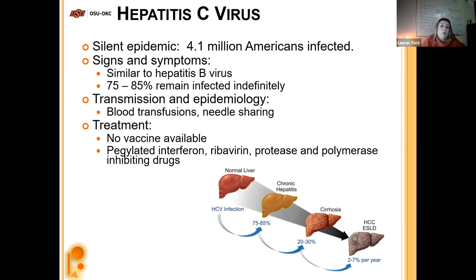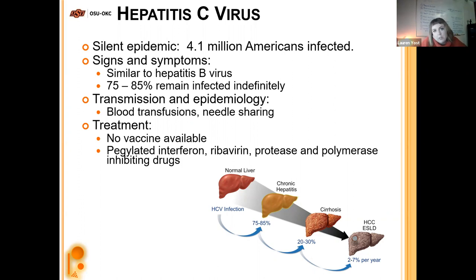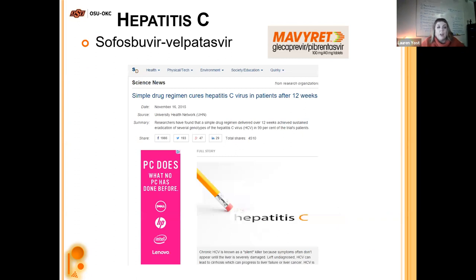About 4.1 million Americans are infected with Hep C. Signs and symptoms are similar to Hep B, but 75 to 85% of people will remain infected indefinitely — basically forever, not recovering from it. Transmission includes blood transfusions from someone who had Hep C or sharing needles for drugs. There's no vaccine for this one. Treatments include pegylated interferon, ribavirin, protease inhibitors, and polymerase inhibitors. There are now antivirals for Hep C that have shown success in actually curing and eliminating the viral infection.